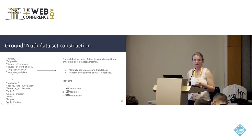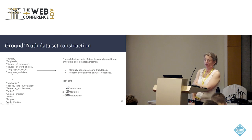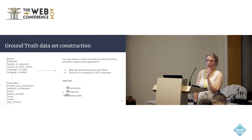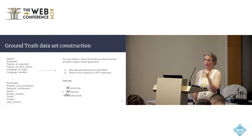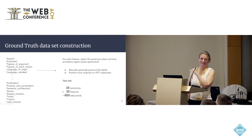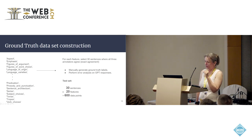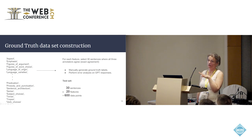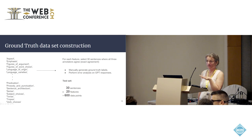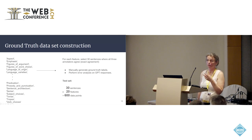We construct a ground truth dataset by taking 30 sentences per feature where all three annotators agreed exactly — about 600 data points. We then manually inspect those 600 data points, and if I don't agree with the correctness of the annotators, I relabel that data point. It's a painstaking manual process, but it generates a nice ground truth dataset of 600 data points. We then use those same 600 data points to perform error analysis on the GPT responses, analyzing GPT's explanations to see what kinds of things it gets wrong.